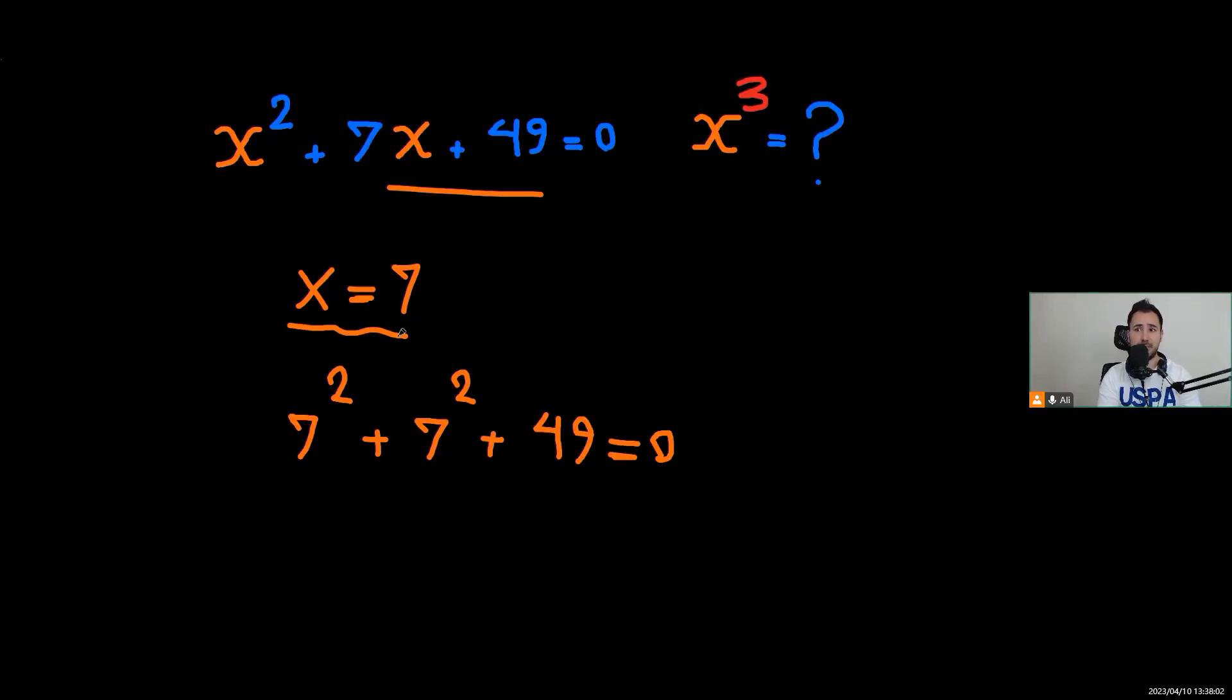So 7 is a solution but it doesn't work. But we didn't do anything wrong. Well, can you explain that? If you can, write it in the comment section.